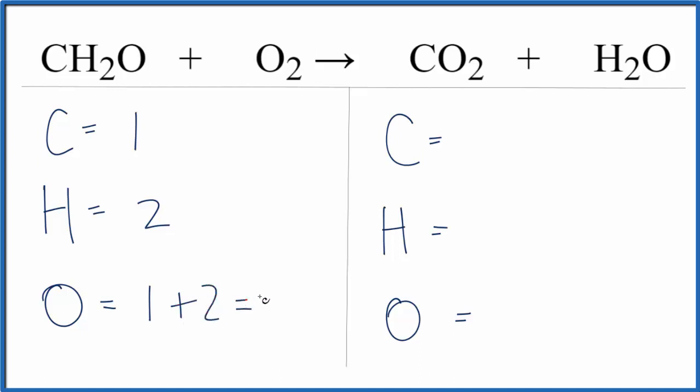So that will give us three oxygens total. Over on the product side we have one carbon, two hydrogens, and we have two oxygens here, and then one oxygen here, so we have a total of three.